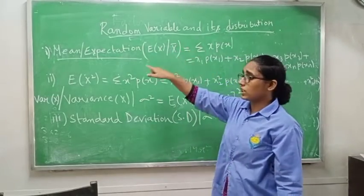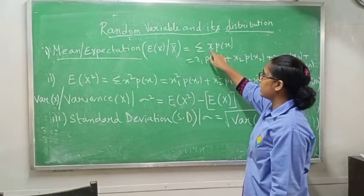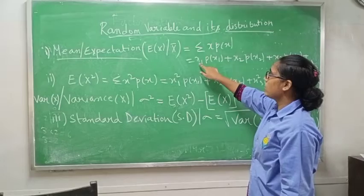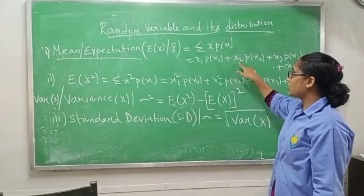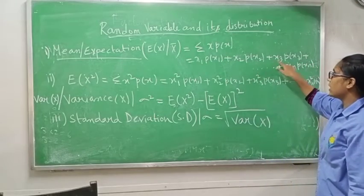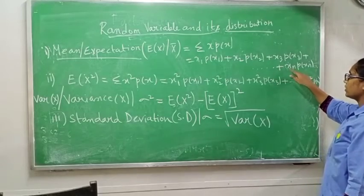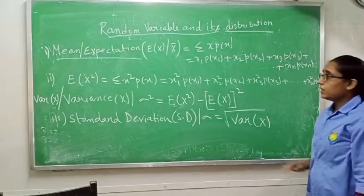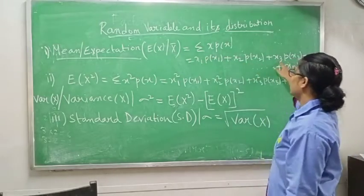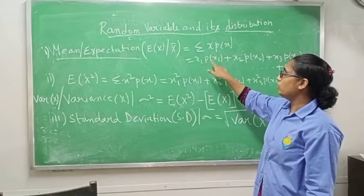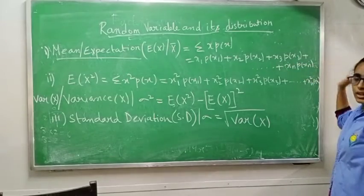The formula for expectation or mean is summation of x·P(x). It means x1·P(x1) plus x2·P(x2) plus x3·P(x3) and so on up to xn·P(xn). Summation is the addition of all values of x multiplied by their respective probabilities.